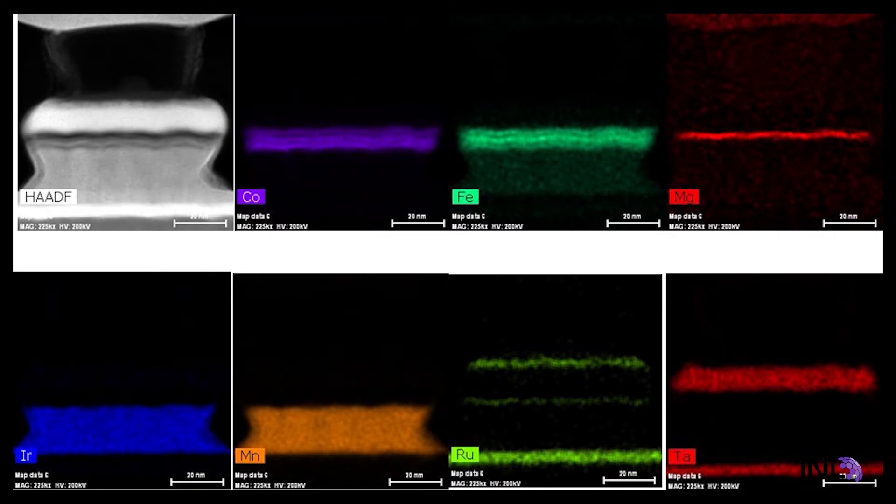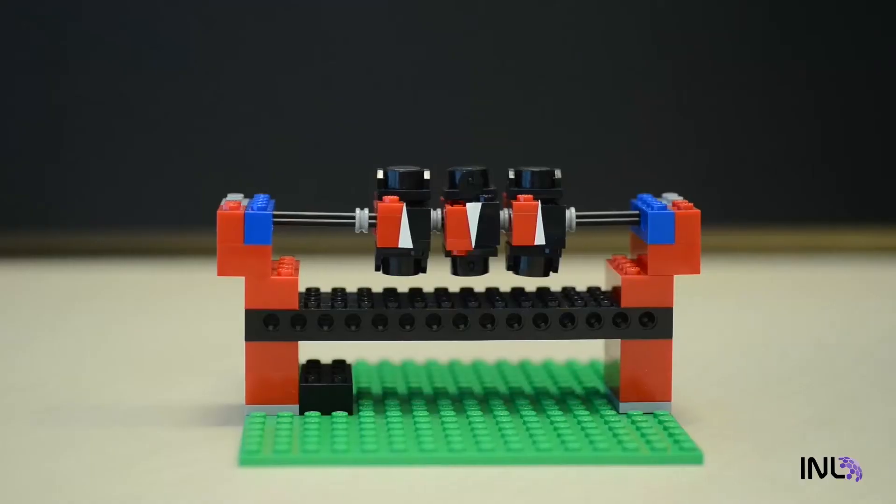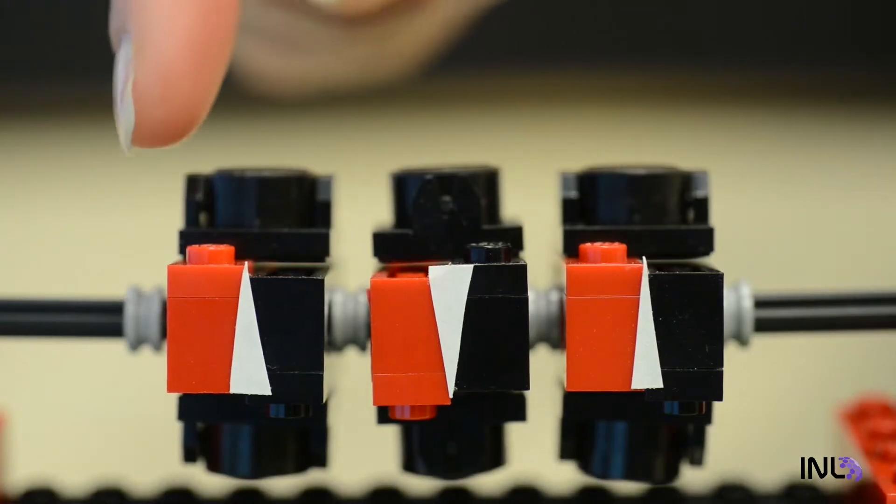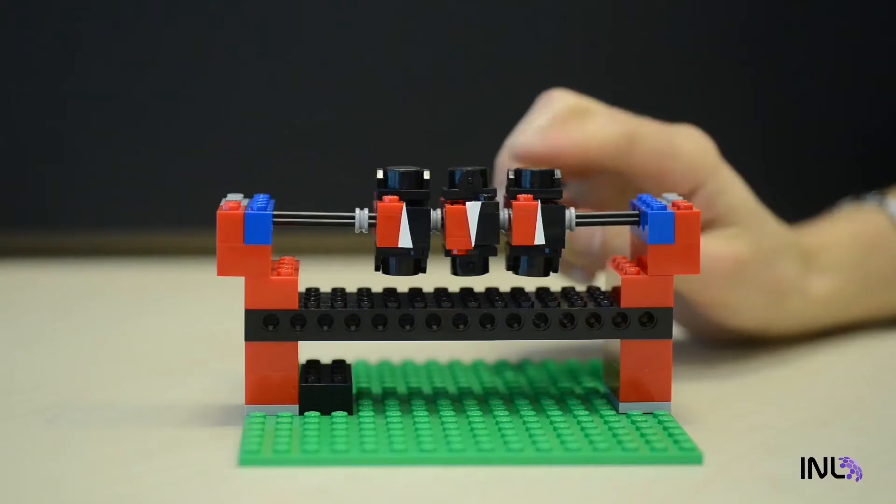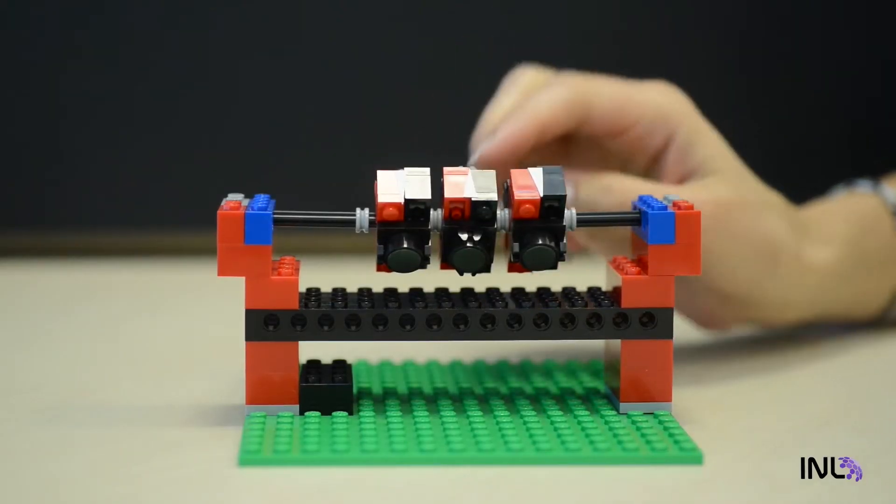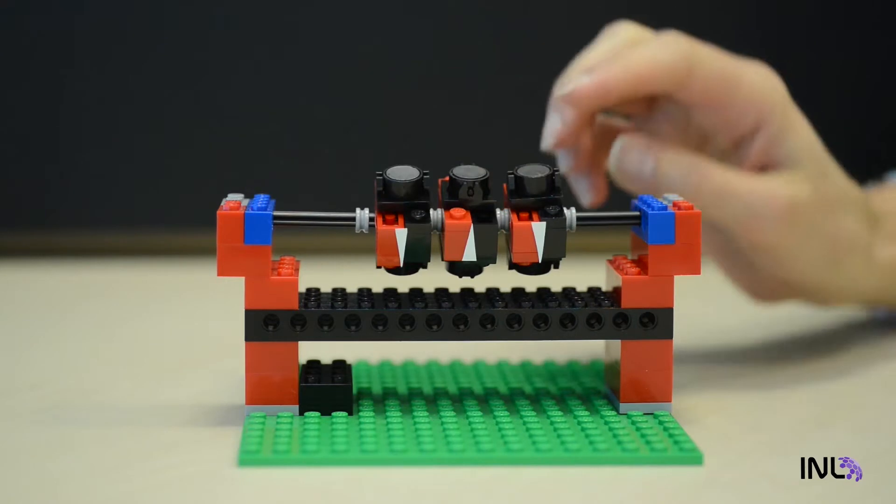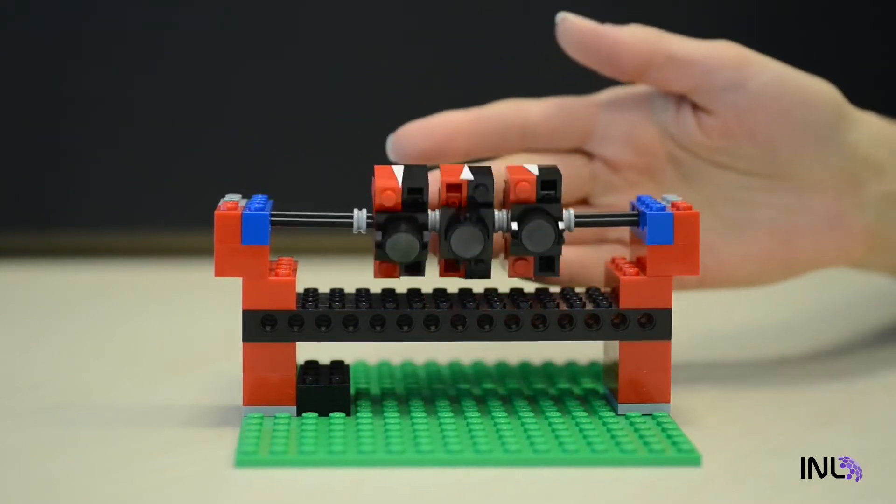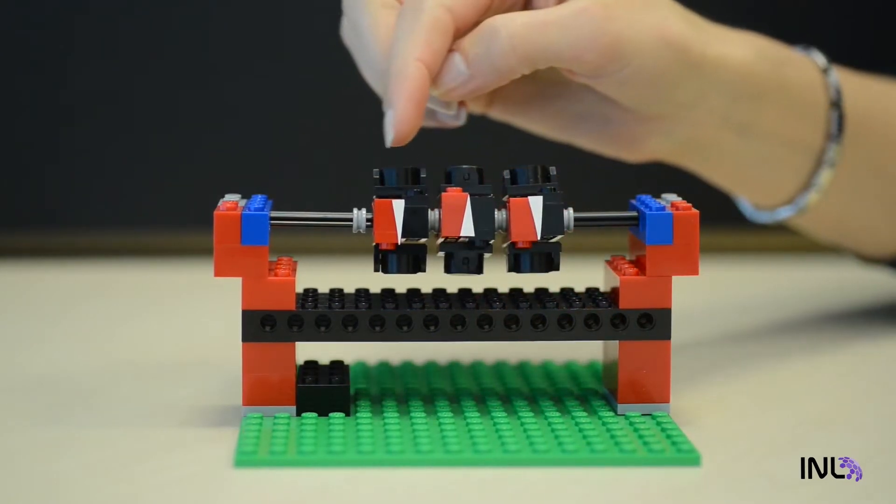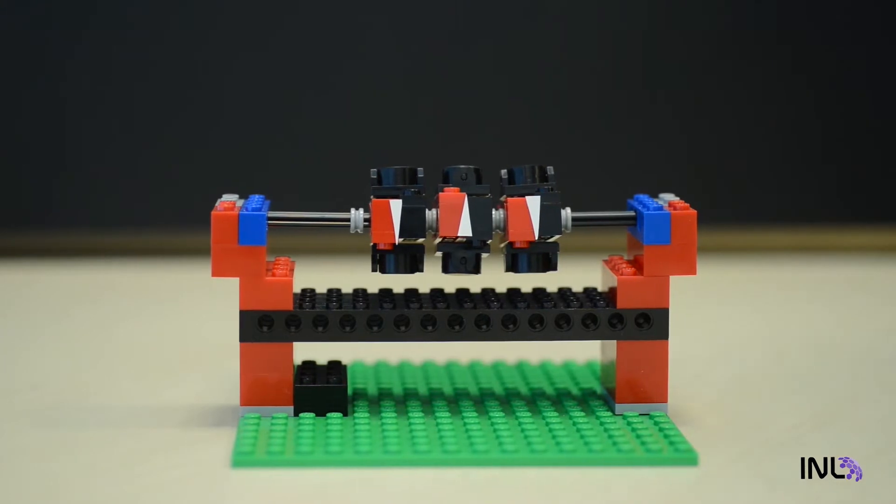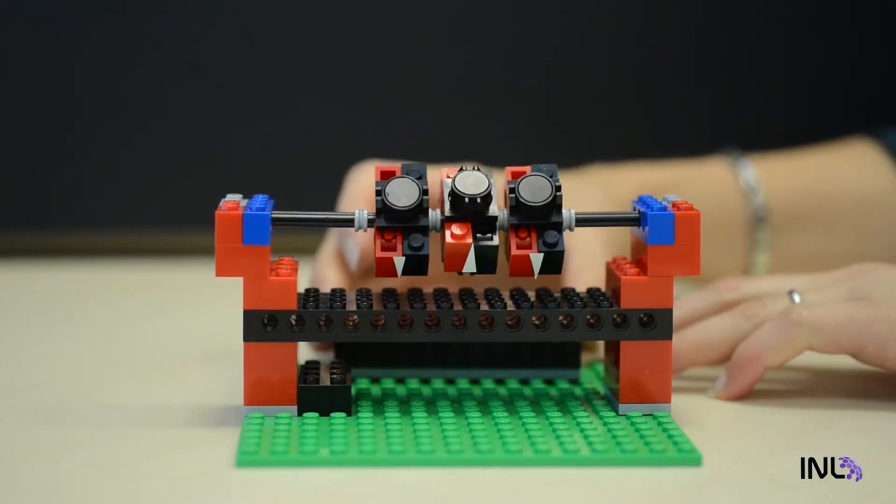The concept can be illustrated using this simplified LEGO model. These three arrows represent magnetic orientation of metal layers in a sensor. A magnetic field changes the orientation of the three layers from alternating to aligned.